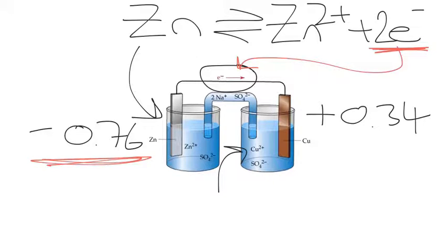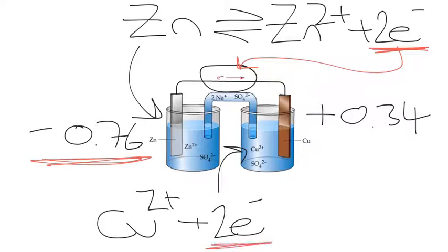The copper half equation is going to be the reverse, so it's going to be Cu2+ + 2e- ⇌ Cu on this side. In terms of state symbols, we would see any solid metal with no charge as a solid, and then anything with a charge that's an ion, in this case Zn2+ and Cu2+, would both be aqueous.